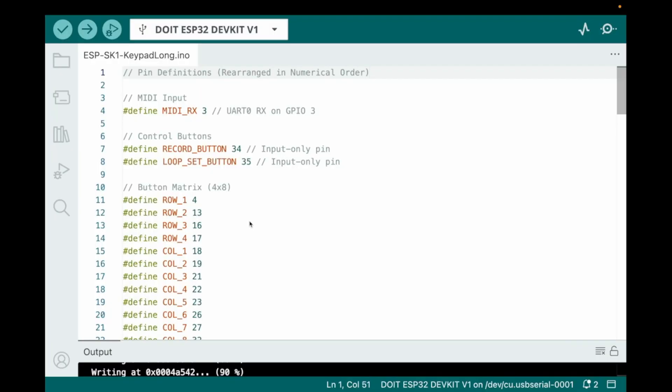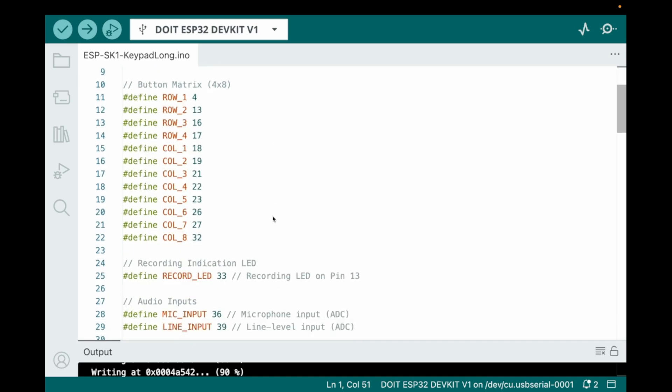I've actually got the code already written and I'm just going to walk through kind of what I've done. First thing we're looking at here is our pin definitions, which we did in the last video. The first thing I've done is I've set up two arrays, one for rows, one for columns. This is just going to help us figure out which button is being pressed. I've set up a debounce delay. Buttons are super noisy. Debouncing helps us get rid of false triggering when we're pressing the buttons. Then we have these two 2D arrays. One stores the last time each button was pressed, and one tracks whether each button is currently being pressed or not.